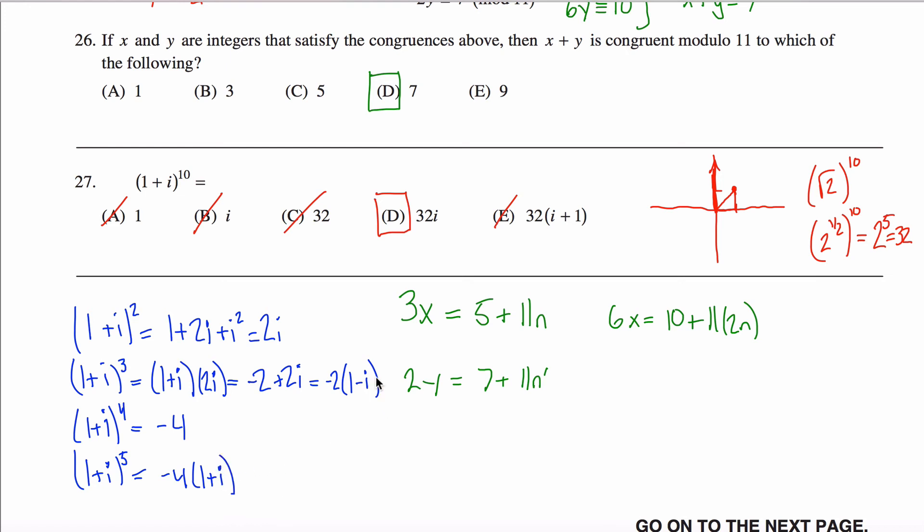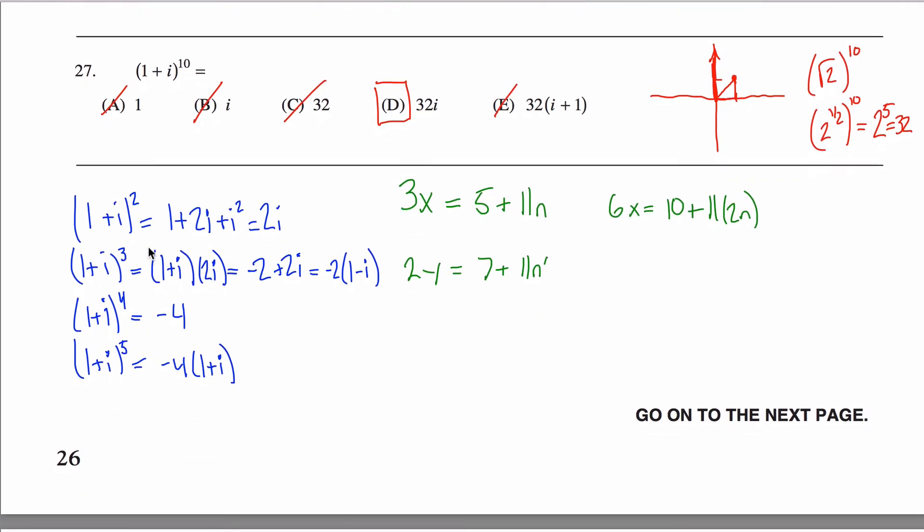And maybe now you can see a little bit of a pattern going on here. Sixth power is going to end up looking a lot like the second power. Because I can think about the sixth power as 1 plus i to the fifth times 1 plus i, instead of 1 plus i times 1 plus i.